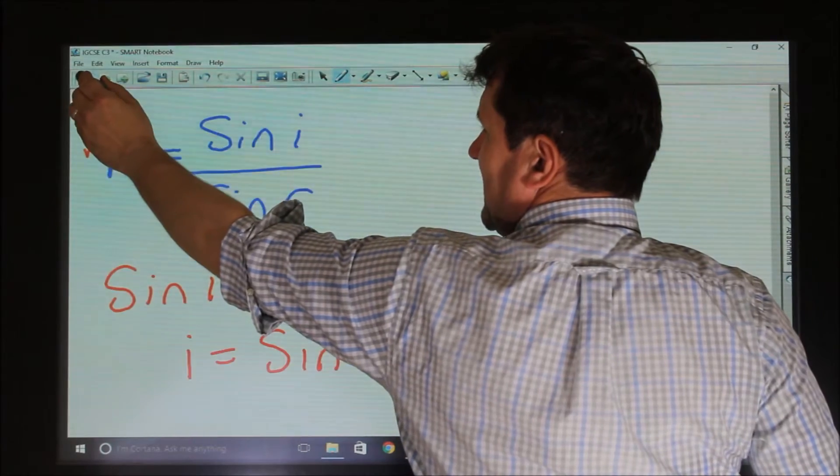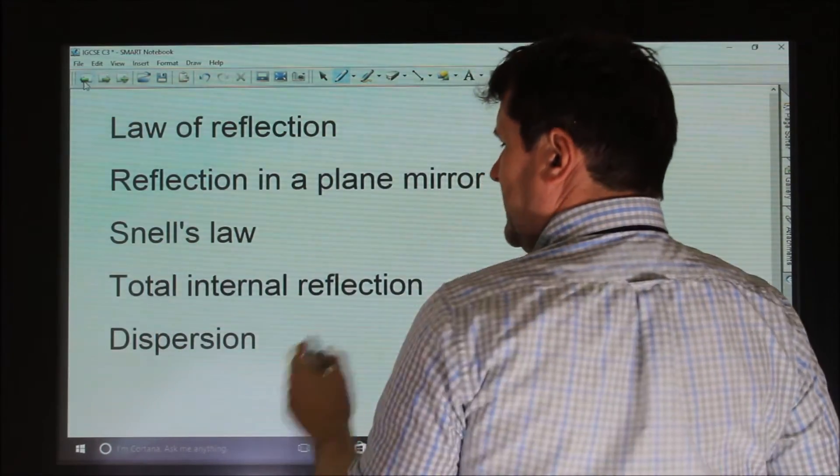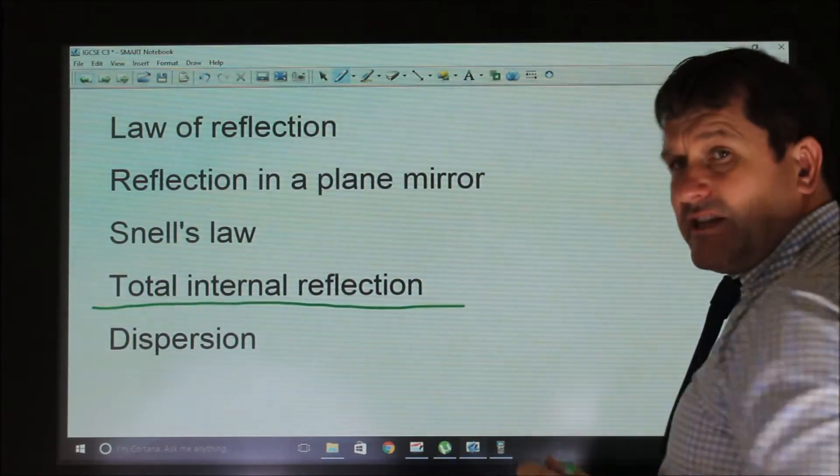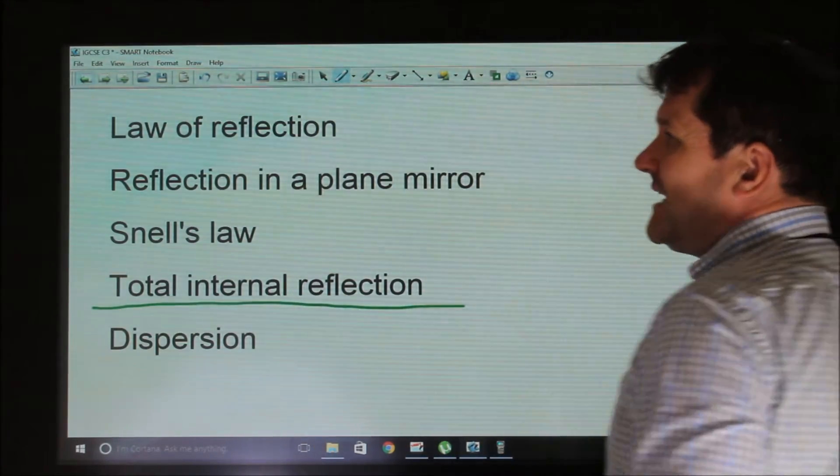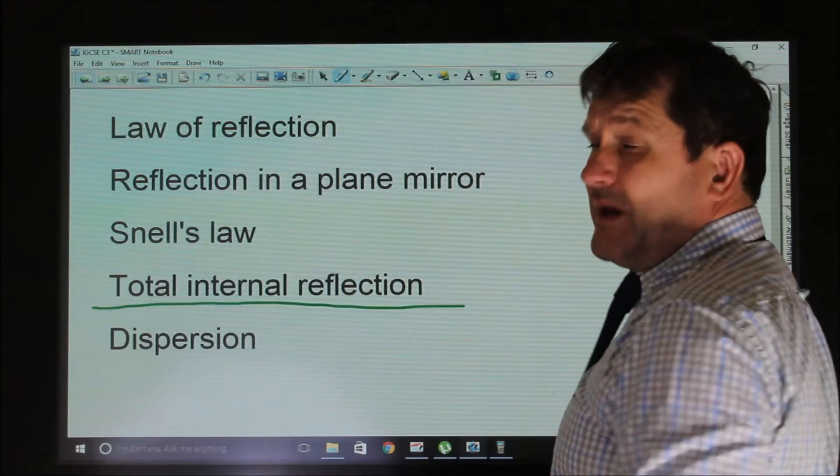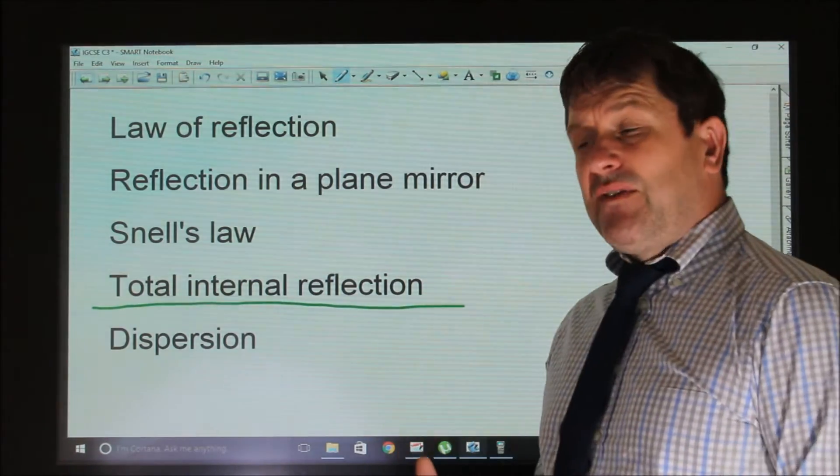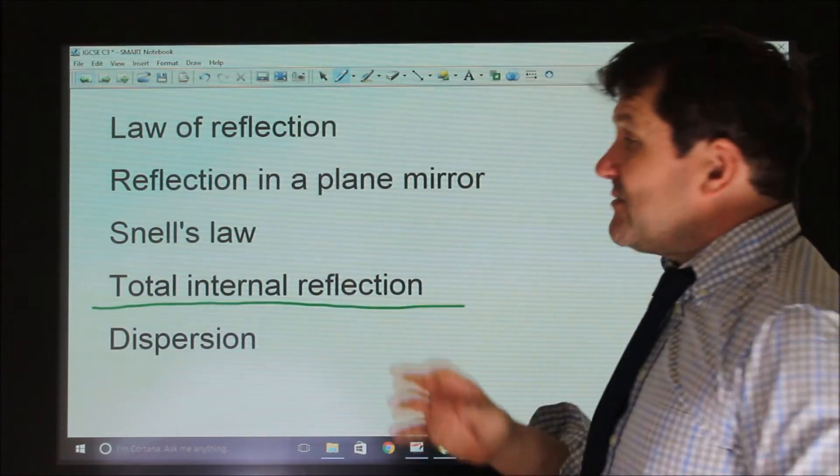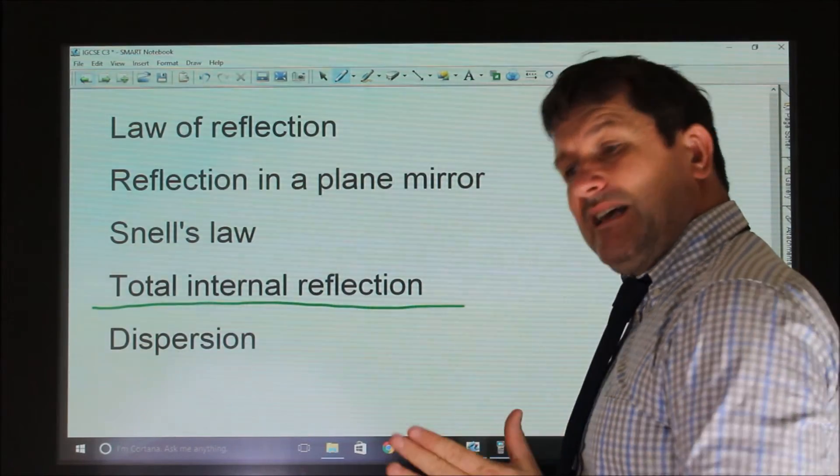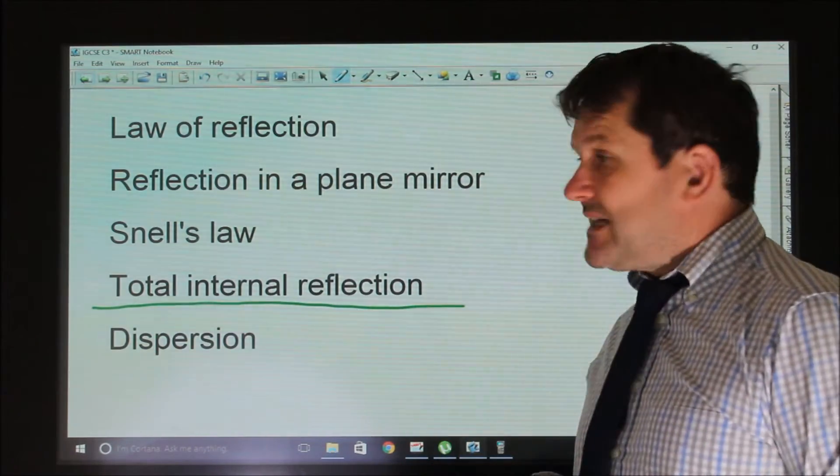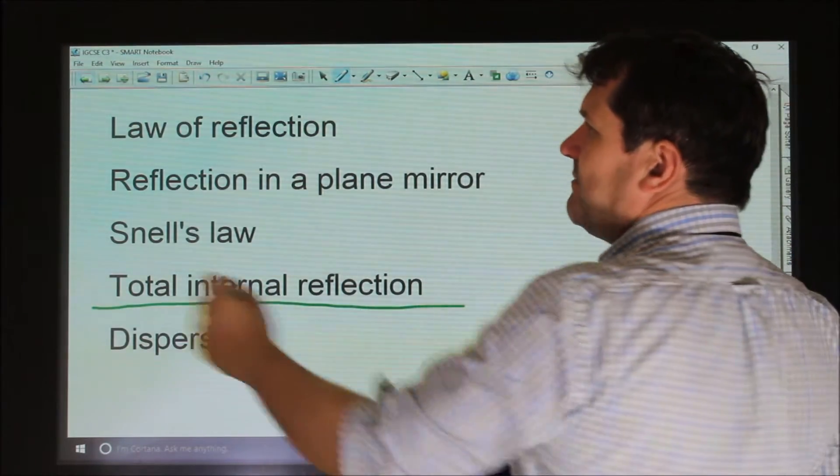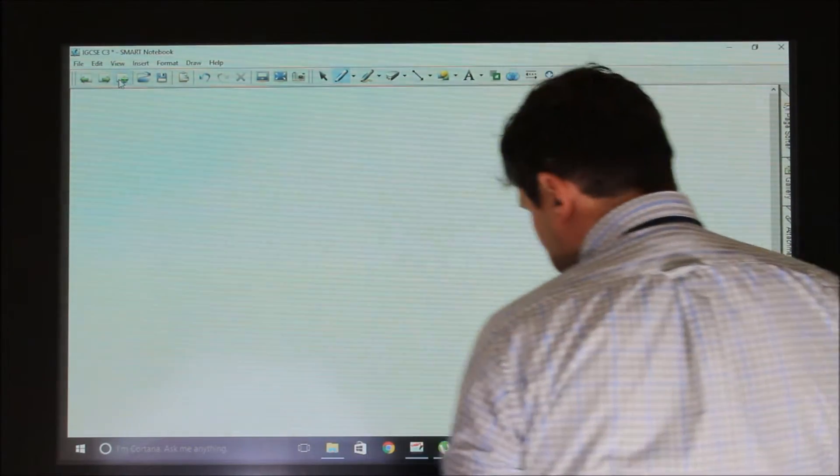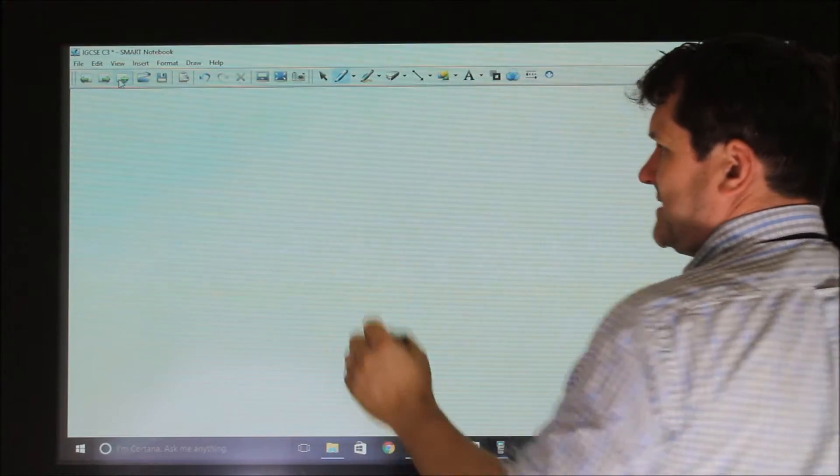Now we also learned total internal reflection. Total internal reflection is when light speeds up as it goes to leave a more optically dense medium into a less optically dense medium. And if that angle is above the critical angle, then the light will totally internally reflect.